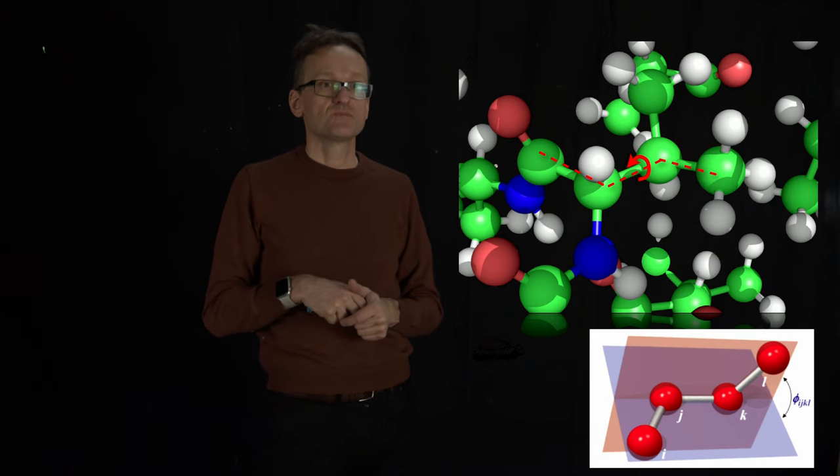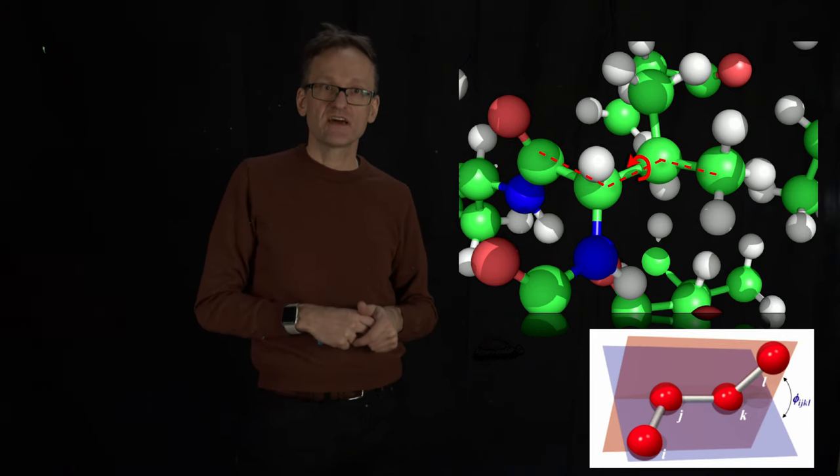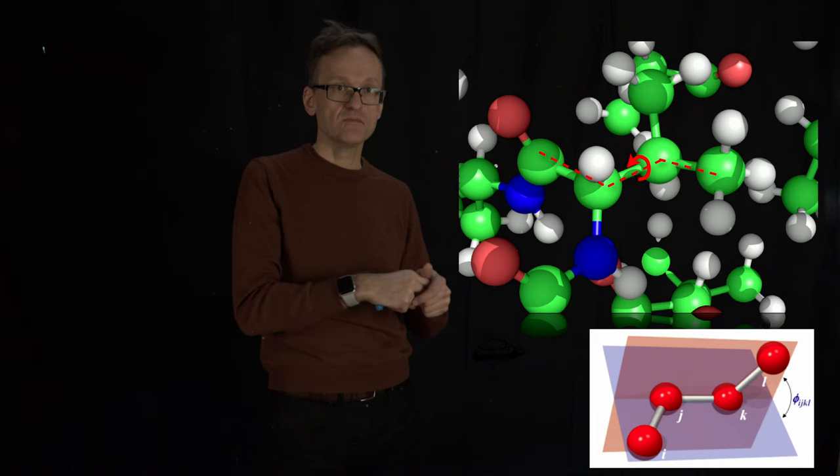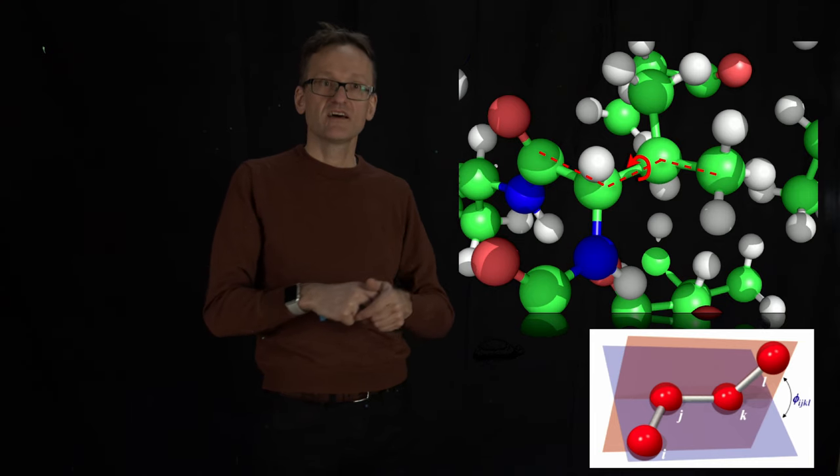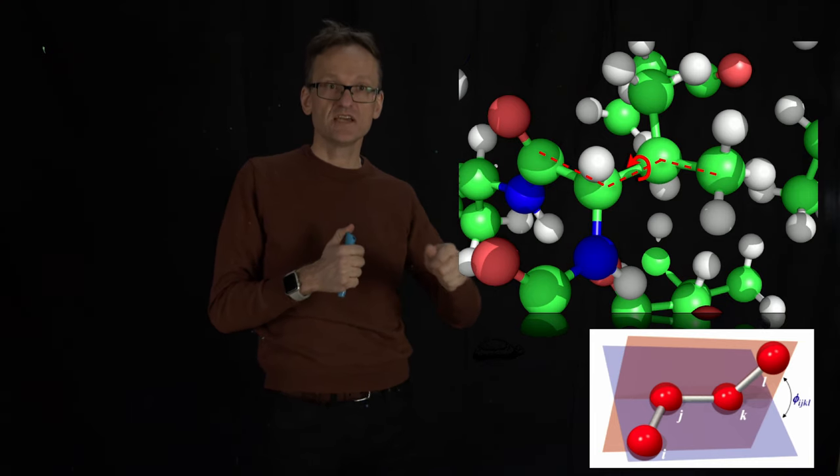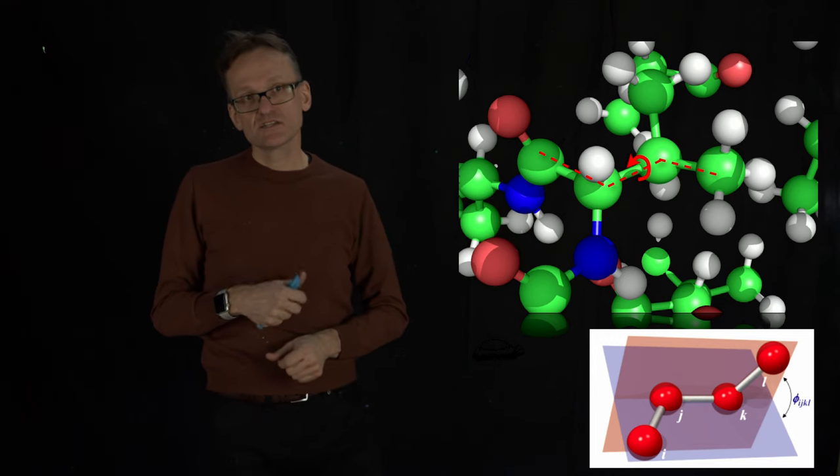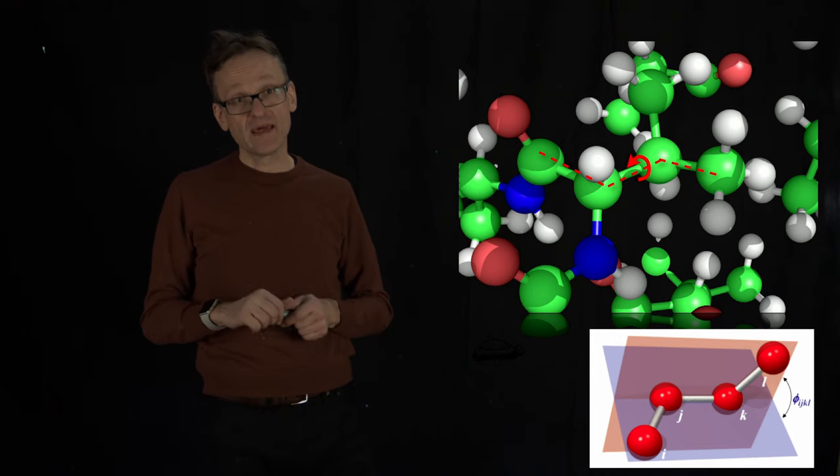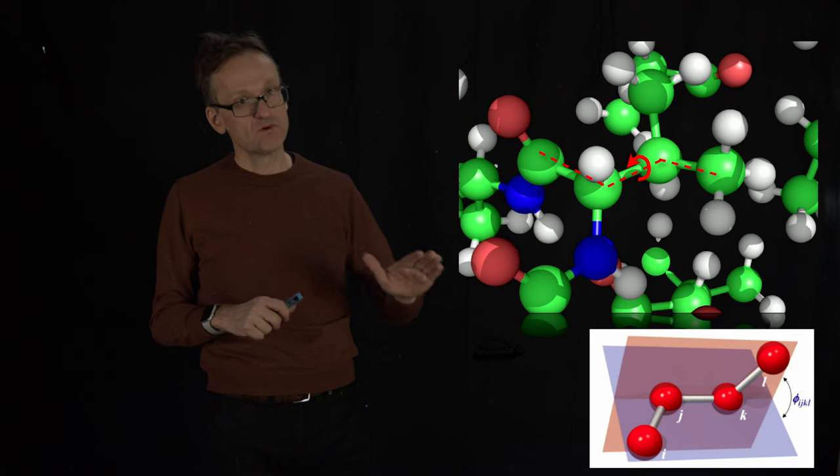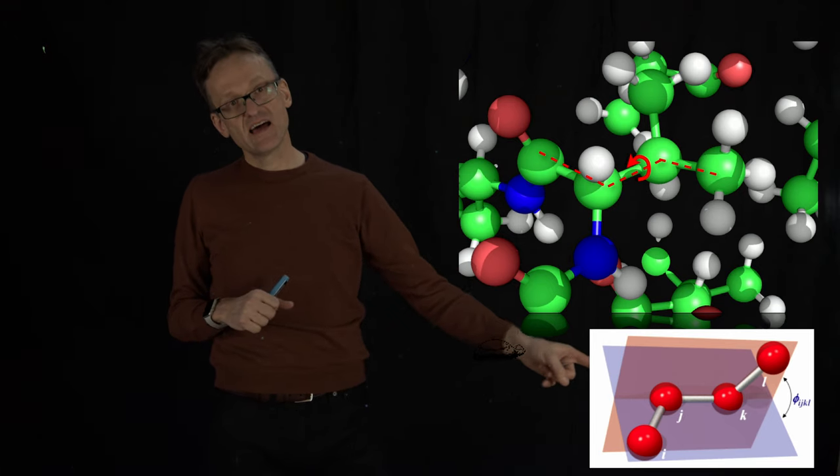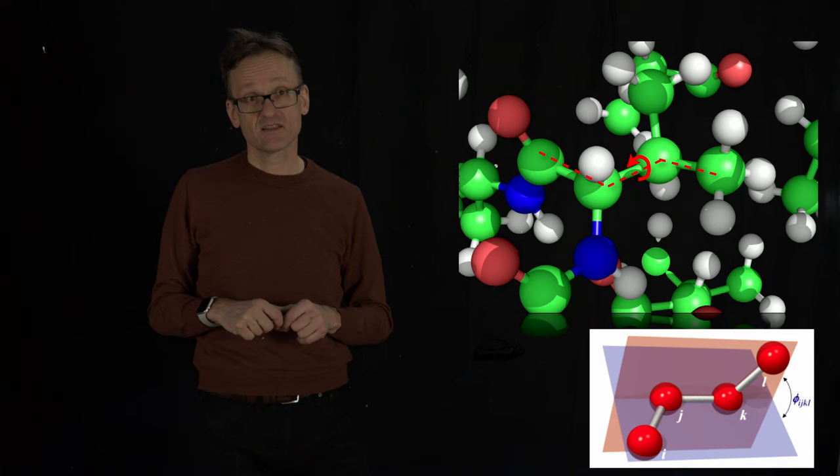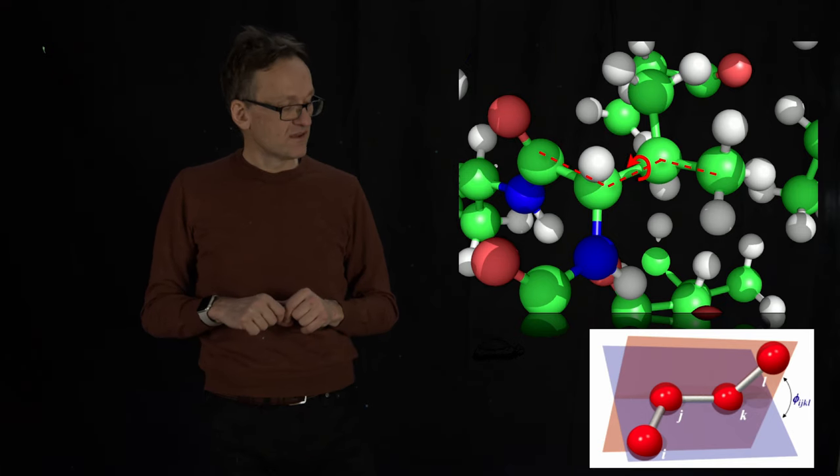The way we define this is by each triplet of atoms here. I, J, K for the first three atoms, and then the last three atoms that would be J, K and L. Each such triplet defines a plane. And then we can take the blue plane here and the red plane, and there is then an angle between those two planes, right? That angle is the torsion angle.